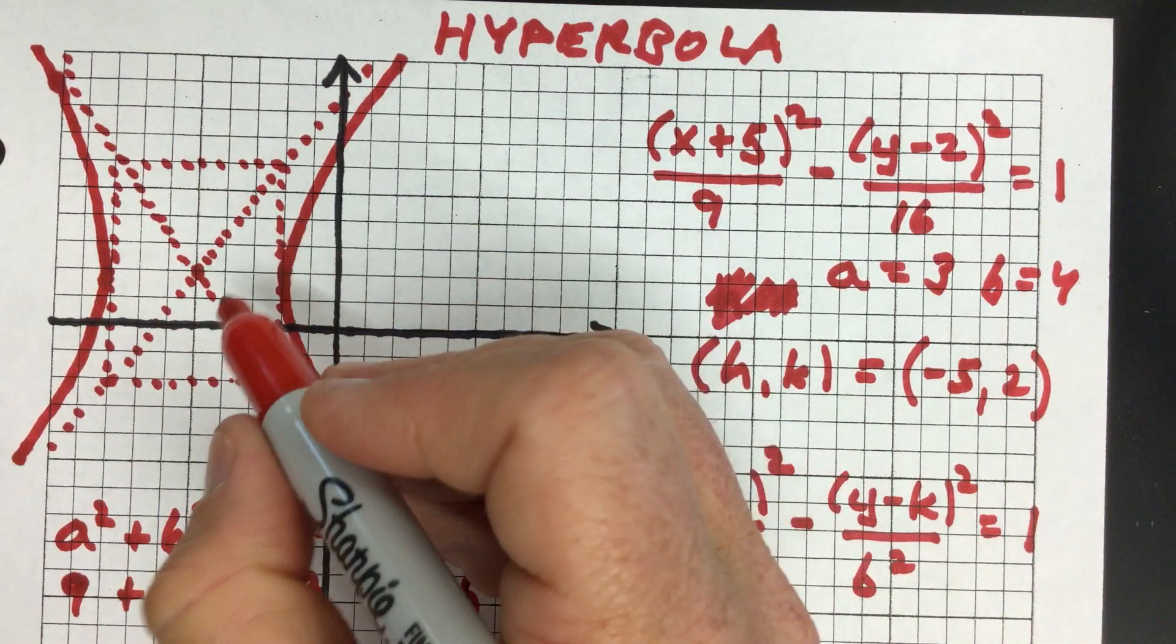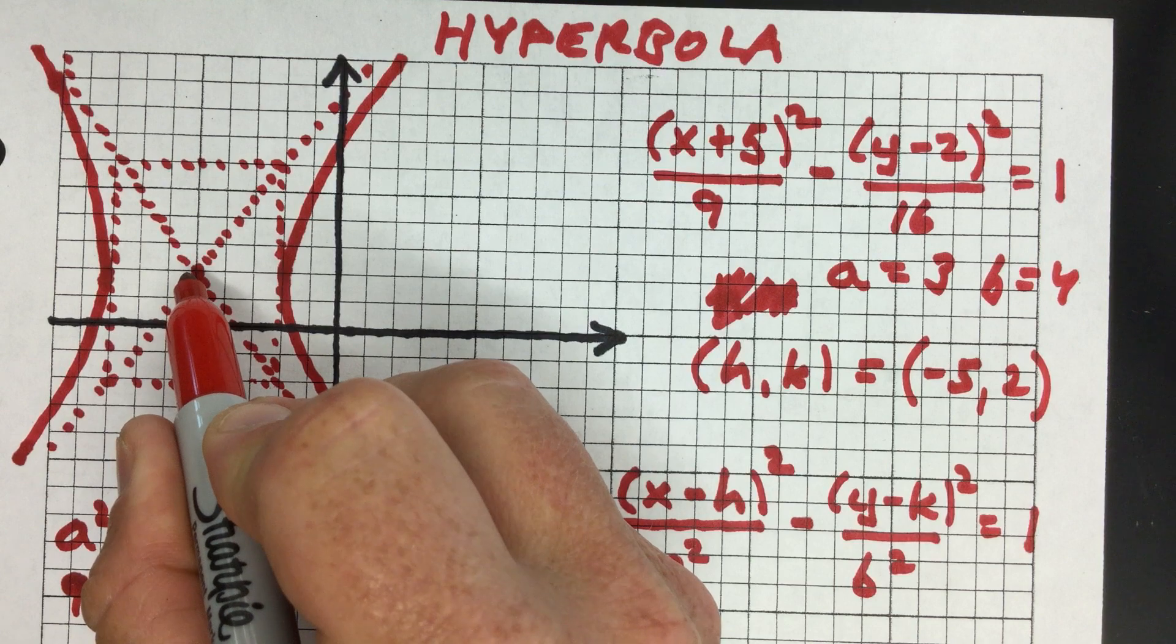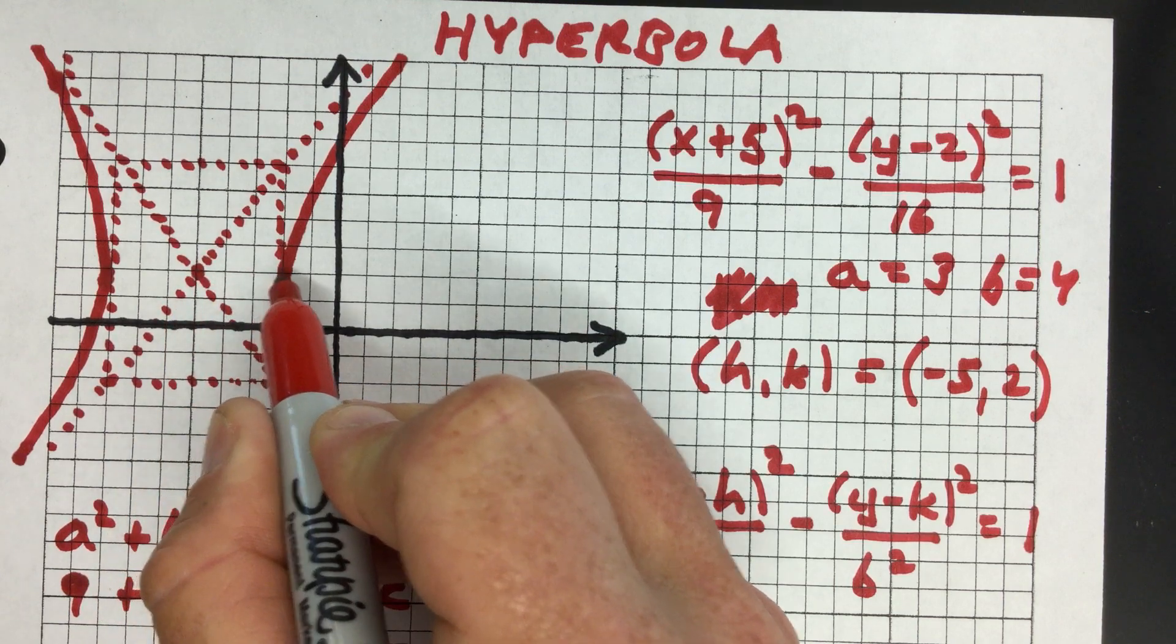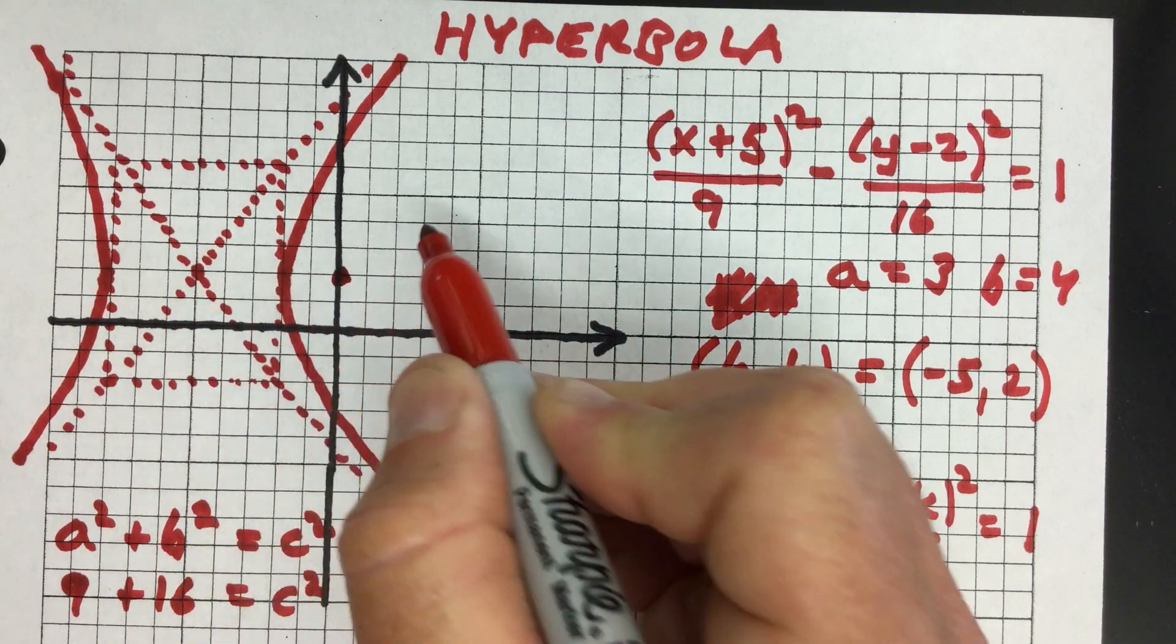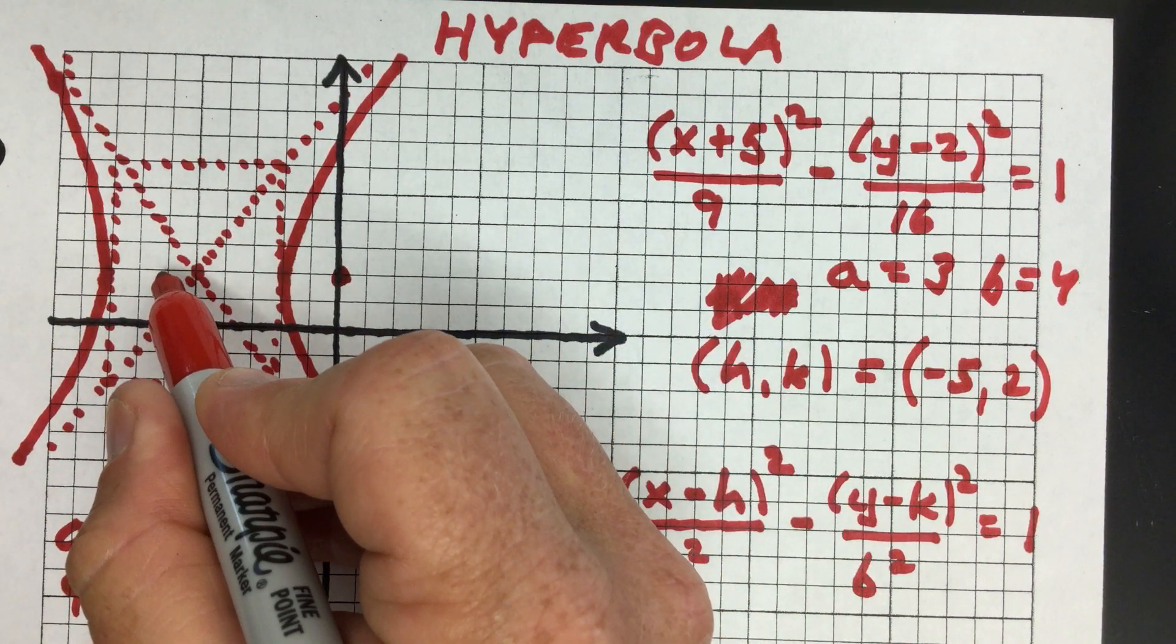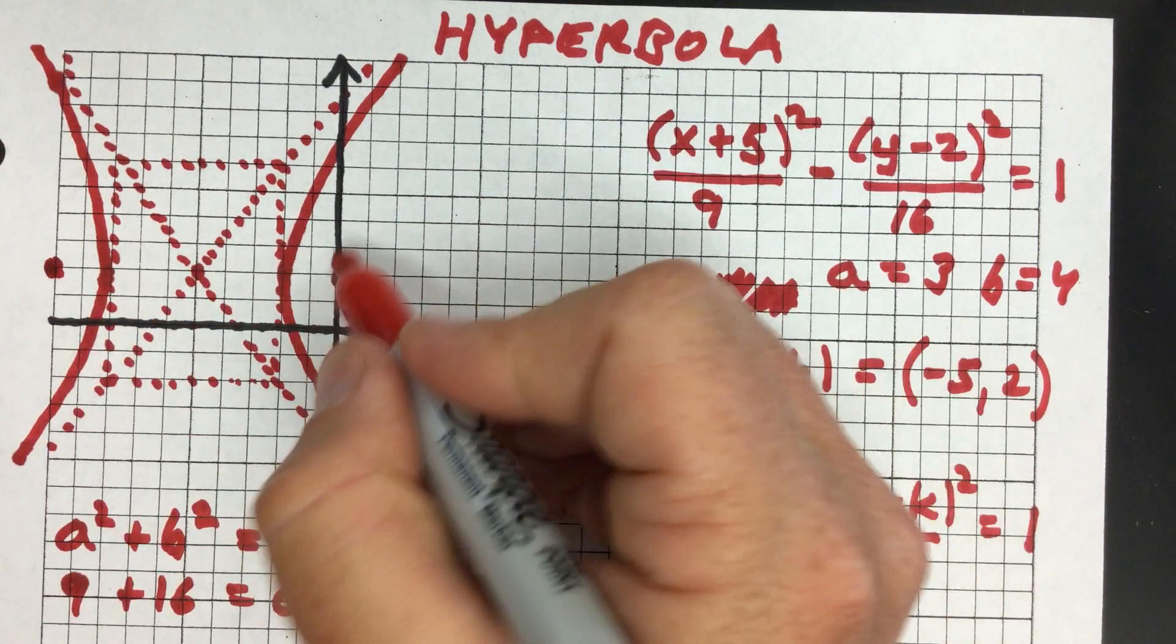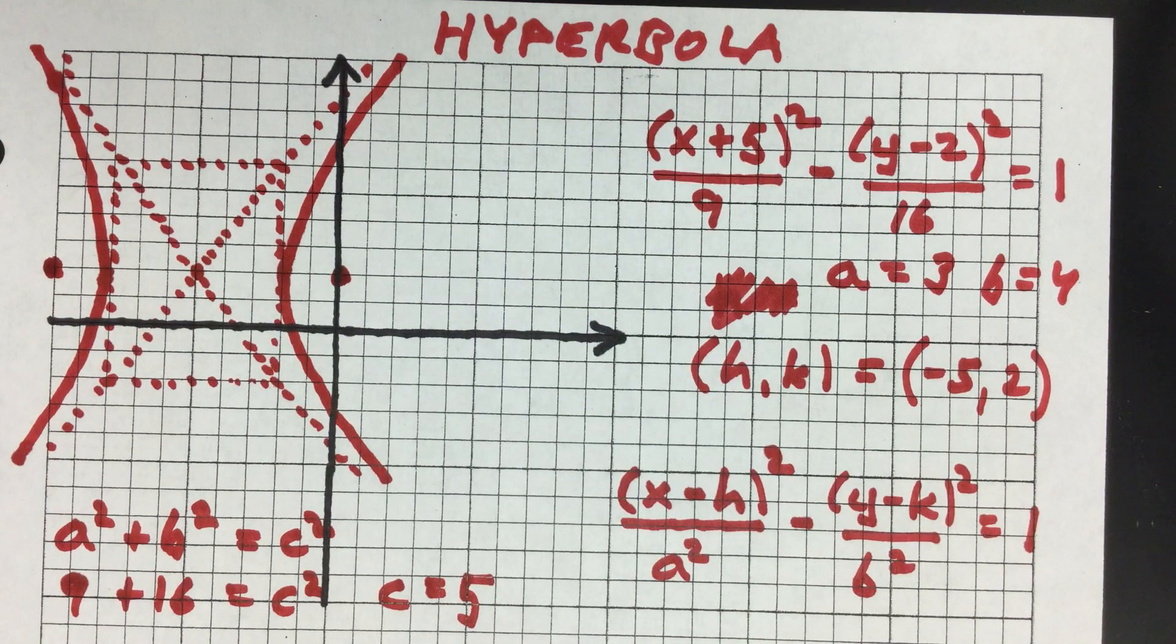So the focal point is going to be, if you count 5 units over, 1, 2, 3, 4, 5, here's one focal point. And then the other one is going to be 5 units this way. 1, 2, 3, 4, 5. So those are the 2 focal points of that hyperbola.